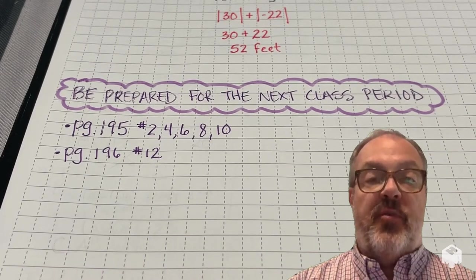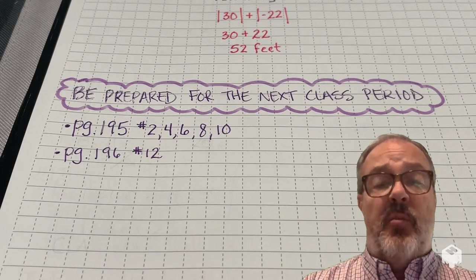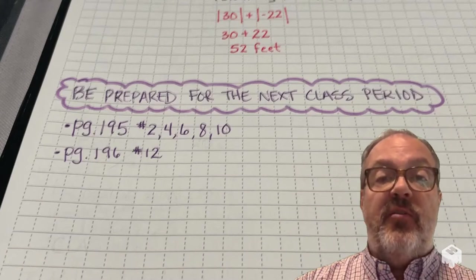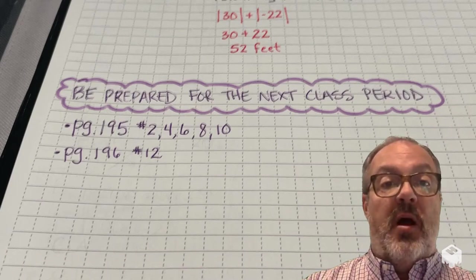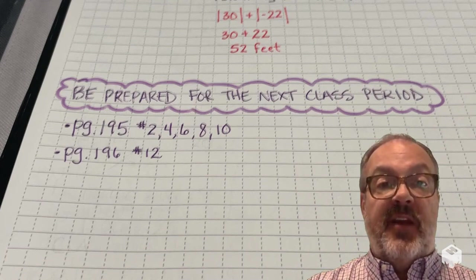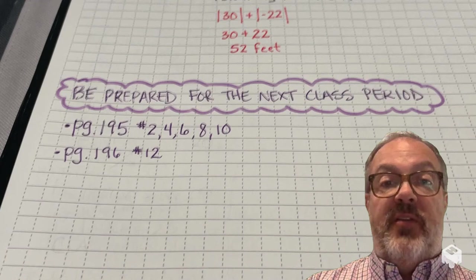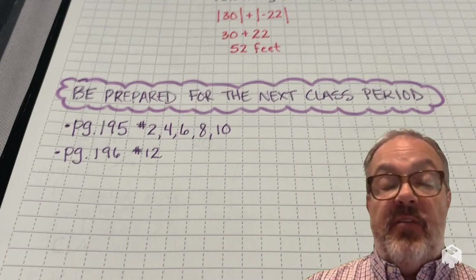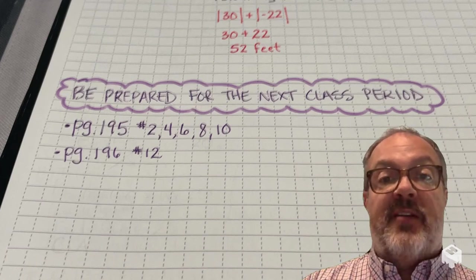All right, so now that you've gone through several of these examples with the guided notes and your textbook and you've used this video to help you understand integers and absolute value a little bit better, I would like for you to work on these six problems to prepare for the next class period. So work on page 195, numbers 2, 4, 6, and 8. And then on page 196, problem number 12. Remember to take a picture of your work, upload it to the assignment in Classroom, and get that turned in before the start of class. This way I can give you some feedback and it'll help determine where you are going to be working during that next class period.